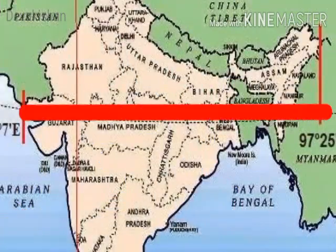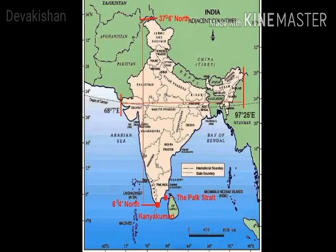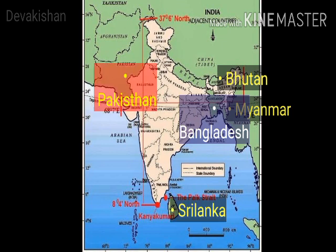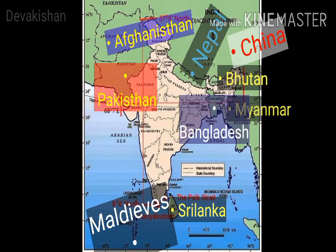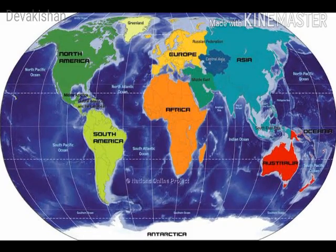The Tropic of Cancer at 23 and a half degrees north latitude passes through the middle of India. The neighboring countries of India are Myanmar, Bangladesh, Bhutan, Sri Lanka, Pakistan, Afghanistan, Nepal, China, and Maldives. Except Sri Lanka and Maldives, the remaining countries share a border with India. India is the second largest nation in terms of population and seventh largest in terms of area.